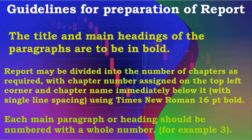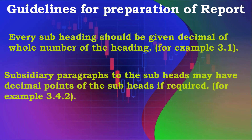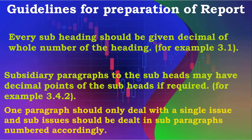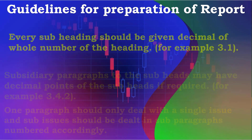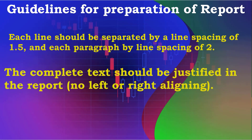Number 6: Each main paragraph or heading should be numbered with a whole number, for example 3. Number 7: Every subheading should be given a decimal of the whole number of the heading, for example 3.1. Number 8: Subsidiary paragraphs to the subheads may have decimal points of the subheads if required, for example 3.4.2. Number 9: One paragraph should only deal with a single issue and sub-issues should be dealt in sub-paragraphs numbered accordingly. Number 10: Each line should be separated by a line spacing of 1.5 and each paragraph by line spacing of 2. Number 11: The complete text should be justified in the report — no left or right aligning.